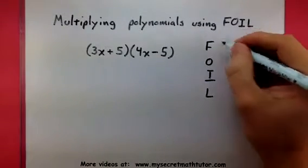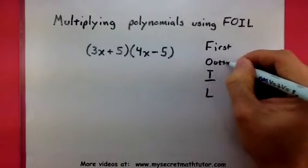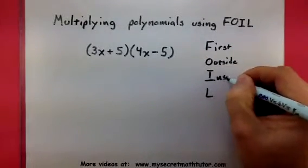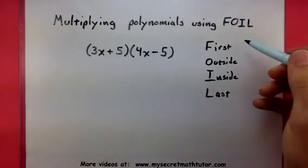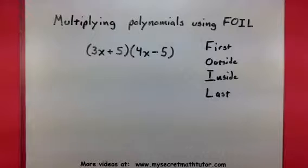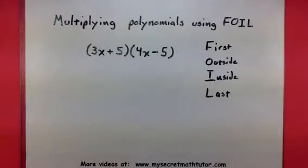FOIL stands for first, outside, inside, and last. This is how we will remember which terms to multiply. So let's see how it works with these two binomials right here.